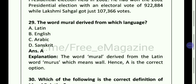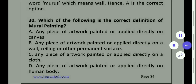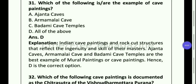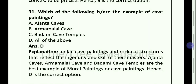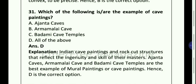The word mural is derived from which language? Option A. Which of the following is or are the examples of cave paintings? Option D, all of the above — that are Ajanta Caves, Arma Malai Caves, and Badami Cave Temples.